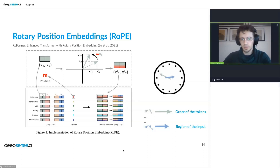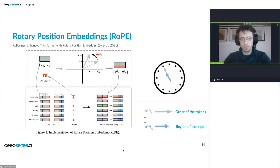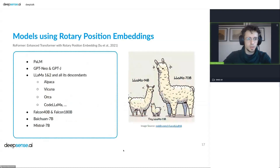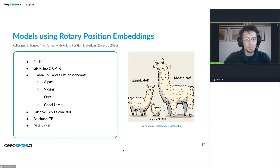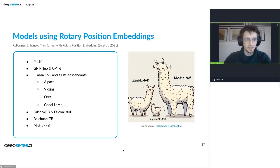RoPE is just another method to encode position in the transformer. Here is the list of models actually using rotary position embeddings: PaLM, GPT-Neo and GPT-J from EleutherAI, and the famous LLaMA models with all their descendants like Alpaca, Vicuña, Orca, and many others. There are also Falcon and Mistral models — quite great representatives.